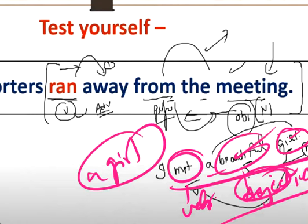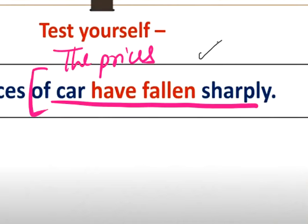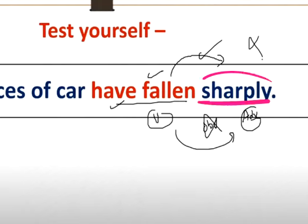Because the noun 'girl' is what we identify as the object; 'beautiful' is just an adjective describing the noun. If it is not 'beautiful', the object would still be 'a girl'. Now, 'prices of car have fallen sharply' - what is the verb? 'Fallen.' After 'fallen' there is 'sharply' - there is no noun or pronoun. Fallen what? Fallen whom? No answer. So it is not an object - 'sharply' is an adverb modifying the verb.